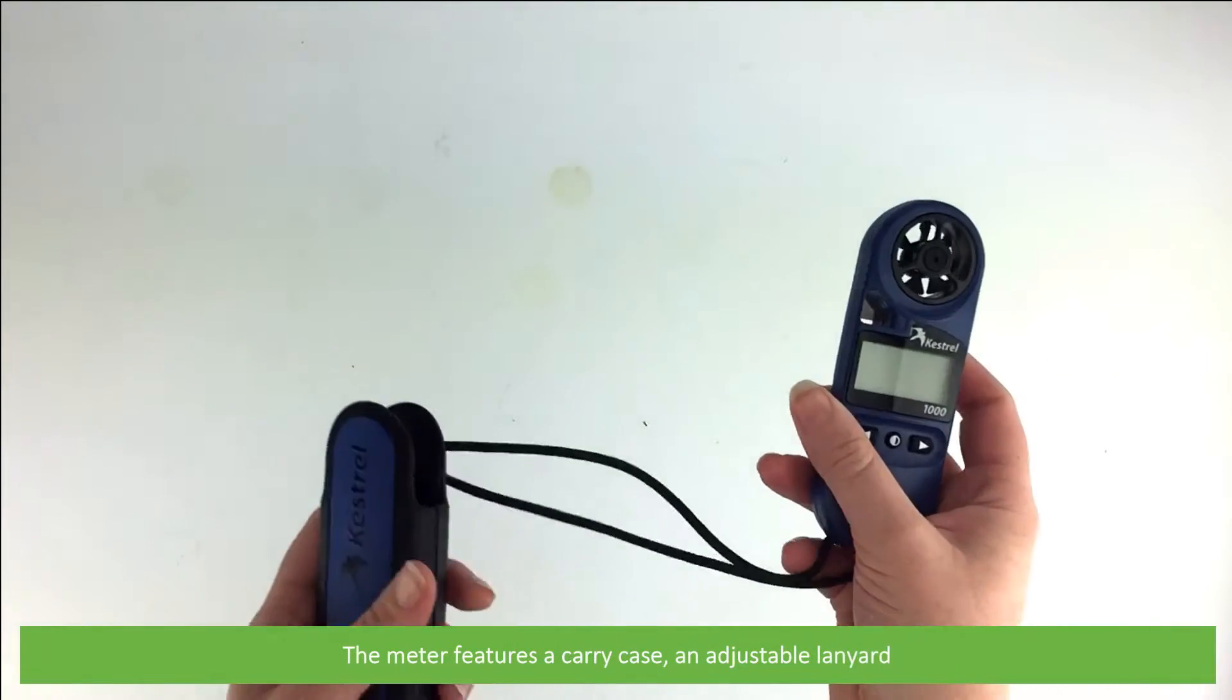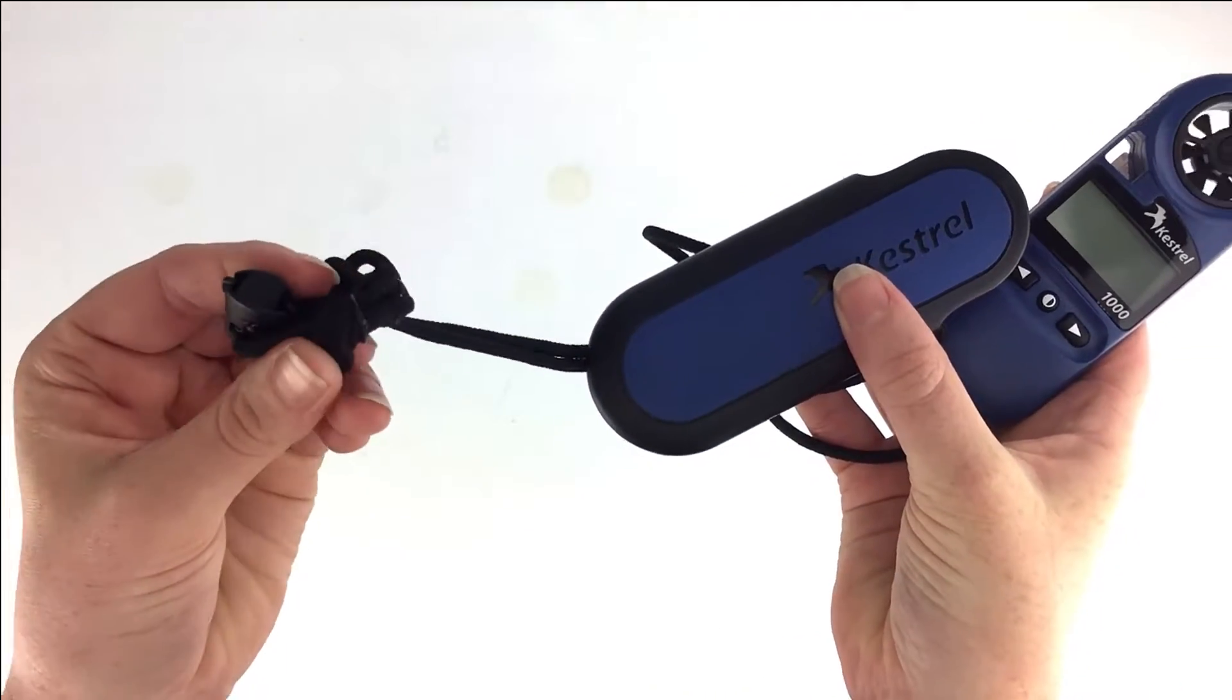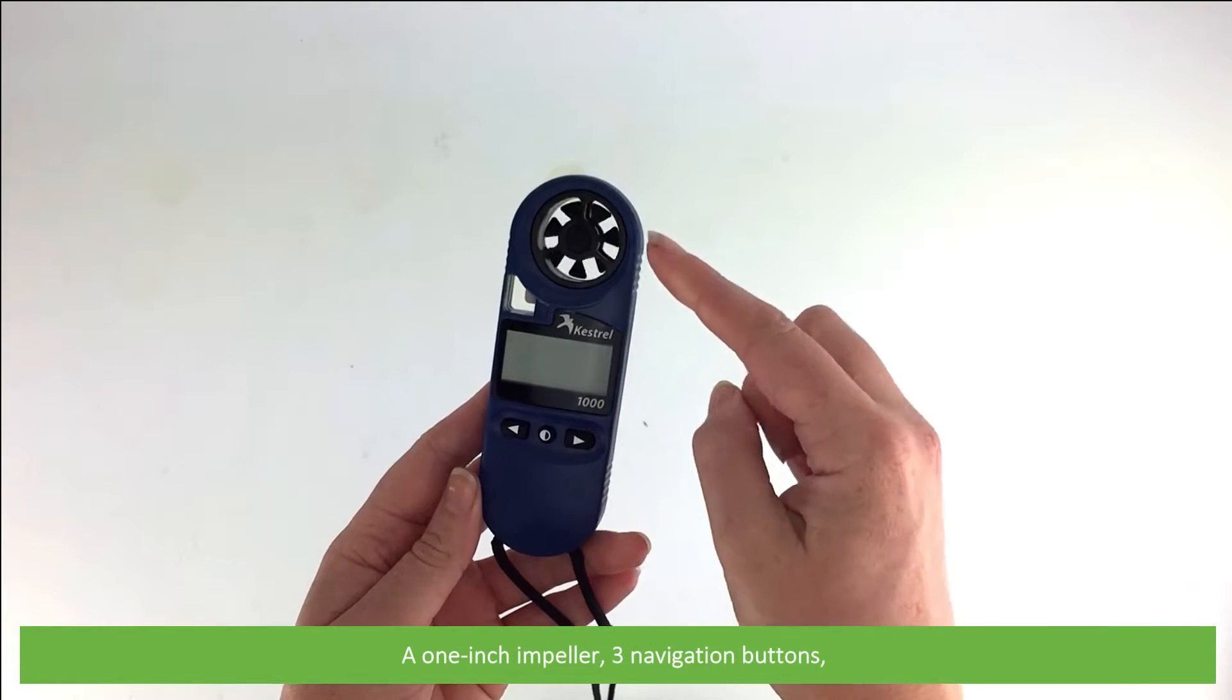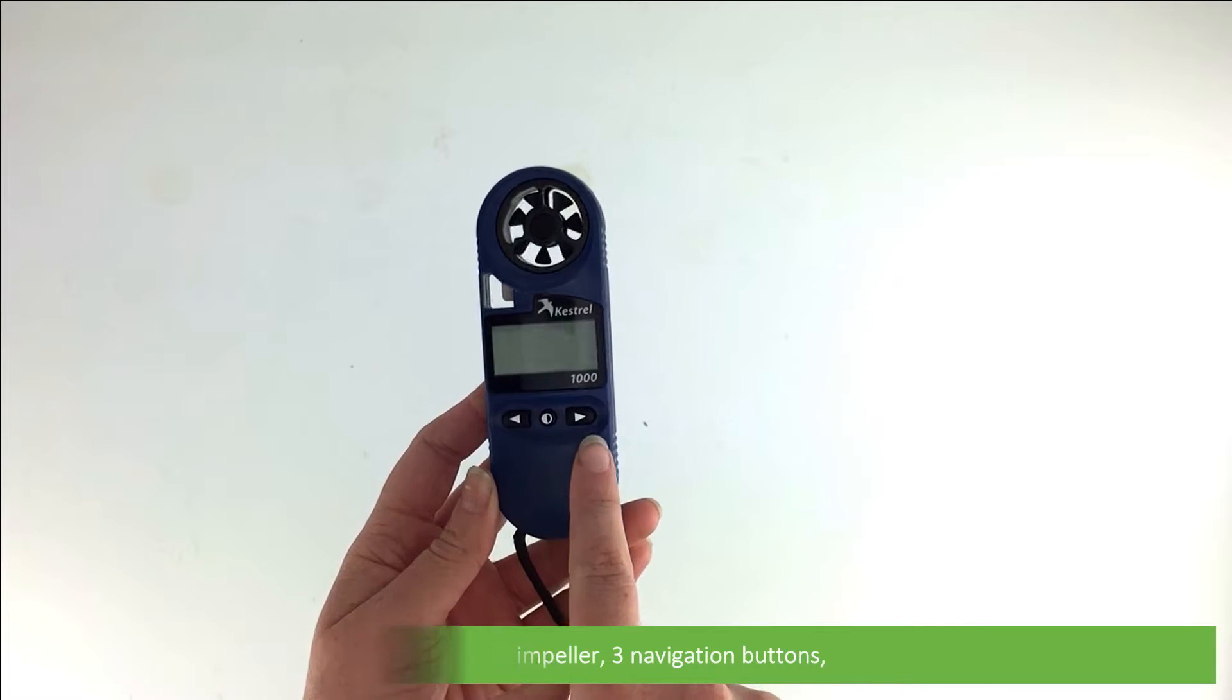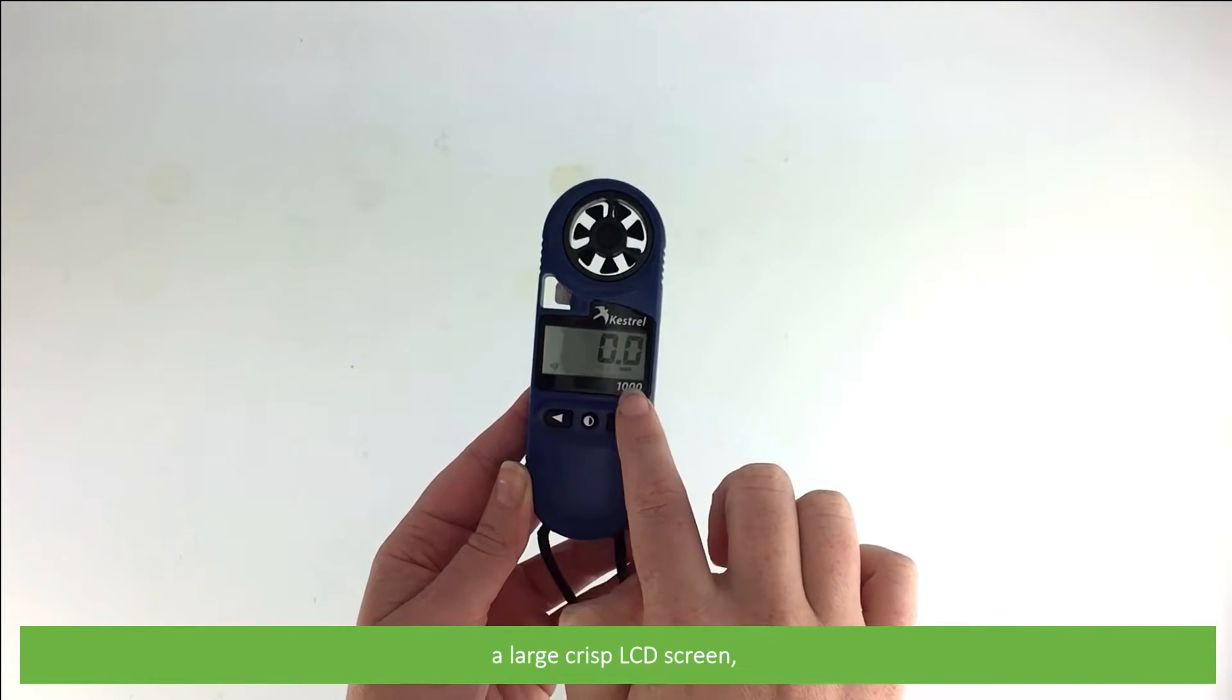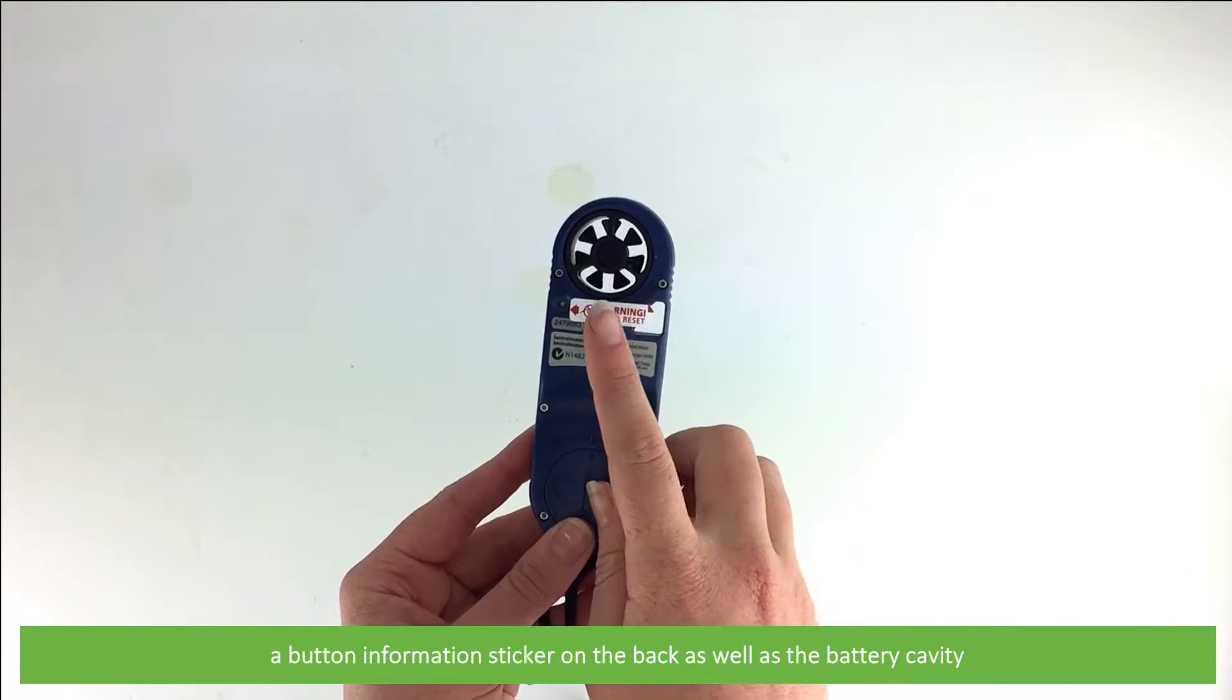The meter features a carry case, an adjustable lanyard, a one-inch impeller, three navigation buttons, a large crisp LCD screen, a button information sticker on the back, as well as the battery cavity.